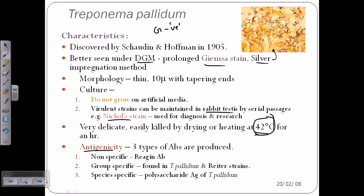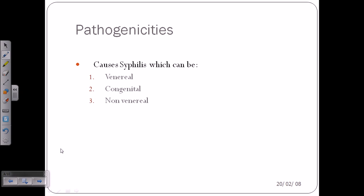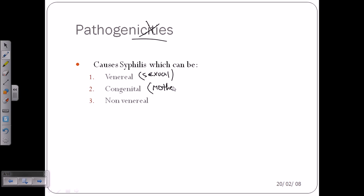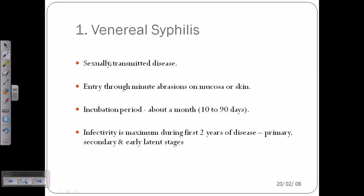Some of them are also non-specific. For the pathogenesis, they can cause three major types of infection: one is venereal infection, also called sexually transmitted disease; another is congenital, which is from mother to infant; and the third is non-venereal, which is a non-sexual interaction disease.